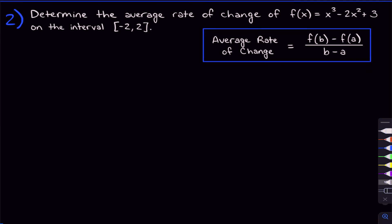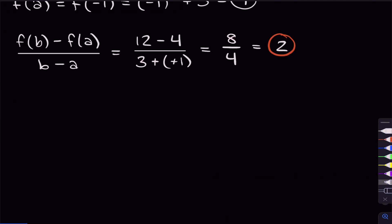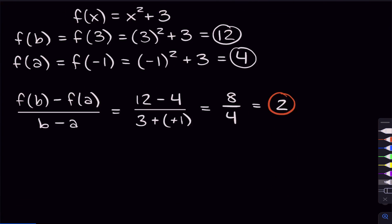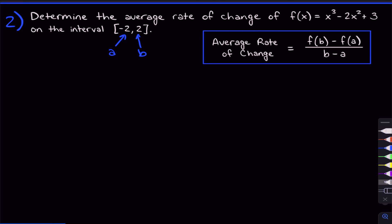Let's move on to our harder problem — problem two — which asks us to determine the average rate of change of f(x) = x cubed minus two x squared plus three on the interval from negative two to two. This is a different looking interval notation than before. This bracket notation simply means from x equals negative two to x equals two. The first number is your a, and the second number is your b.